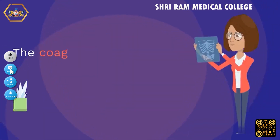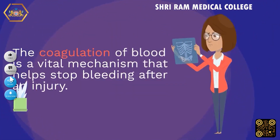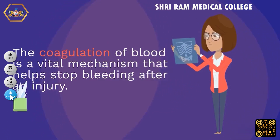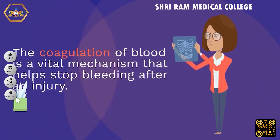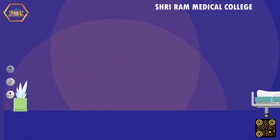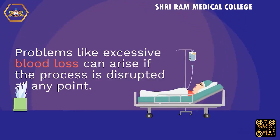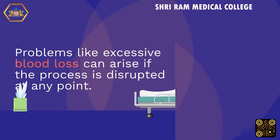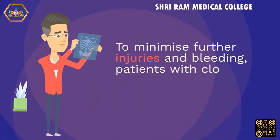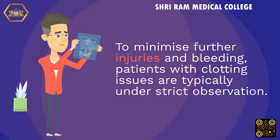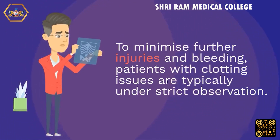The coagulation of blood is a vital mechanism that helps stop bleeding after an injury. Problems like excessive blood loss can arise if the process is disrupted at any point. To minimize further injuries and bleeding, patients with clotting issues are typically under strict observation.